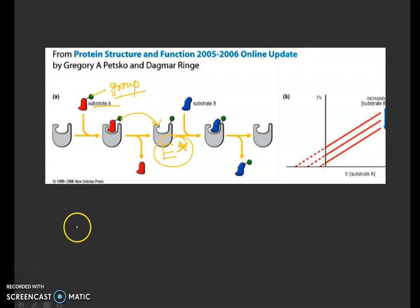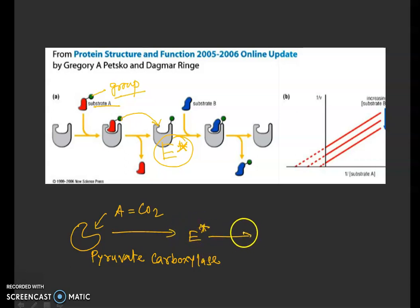The classic example they give is pyruvate carboxylase. If you take pyruvate carboxylase, it is an enzyme and it has a substrate A, that is carbon dioxide. When carbon dioxide binds with this enzyme, it gets activated and moves into E star state that is known as carboxybiotin. Again, this will form a product that is the pyruvate.